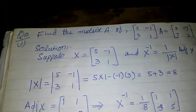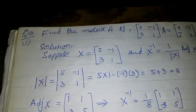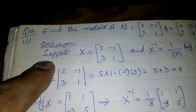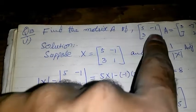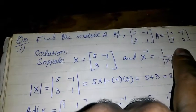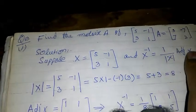Bismillah ar-Rahman ar-Rahim. Today we are going to solve question number 13 part 1: Find the matrix A if the matrix [5, 3; -1, 1] times A equals [3, -7; 7, 2].